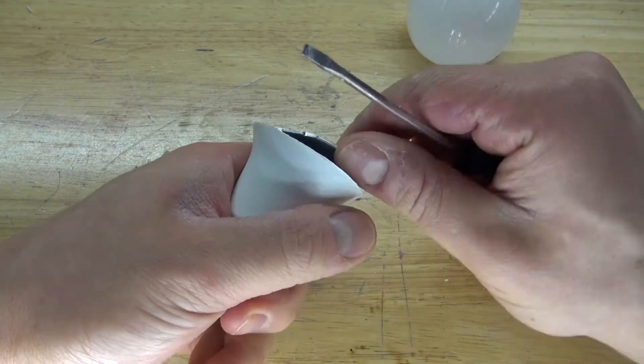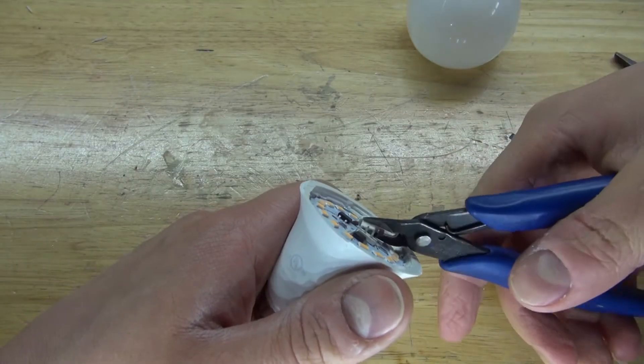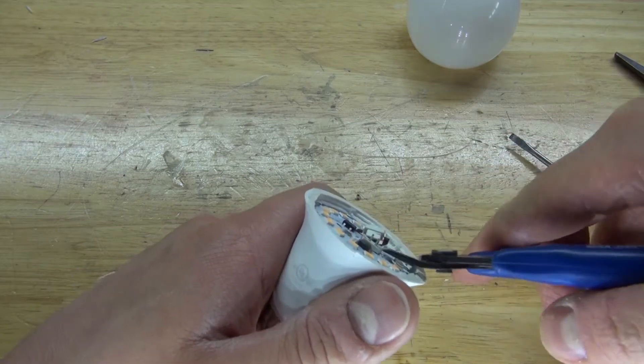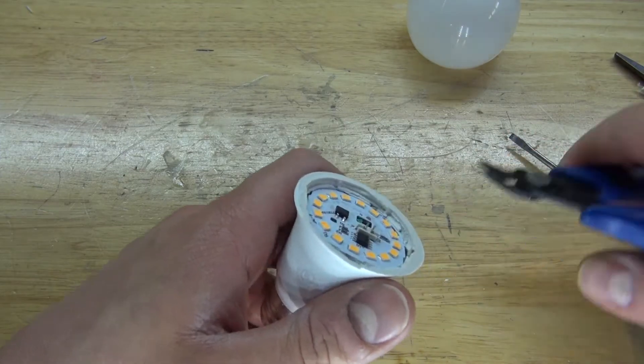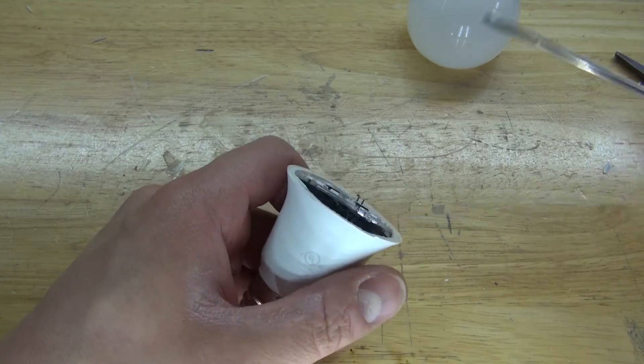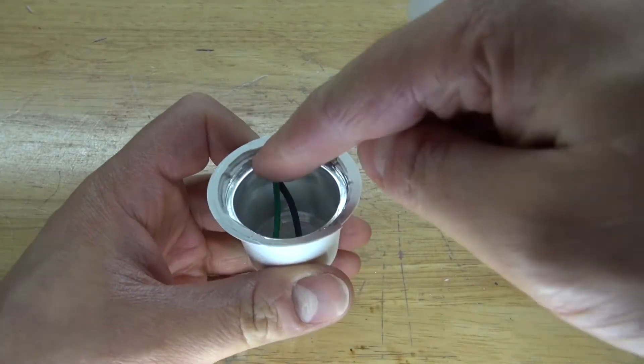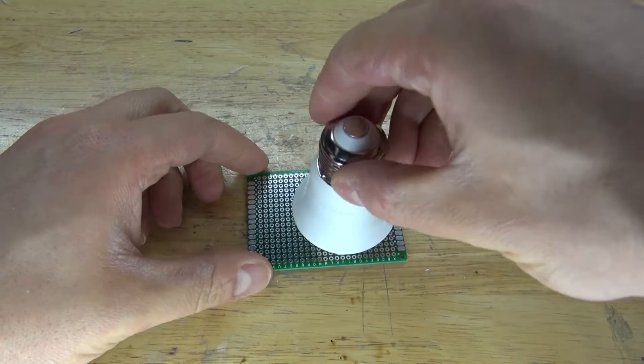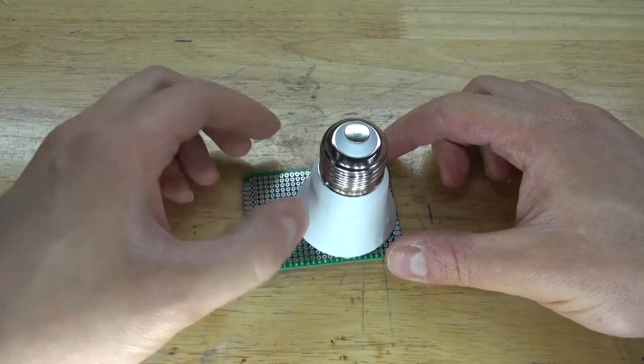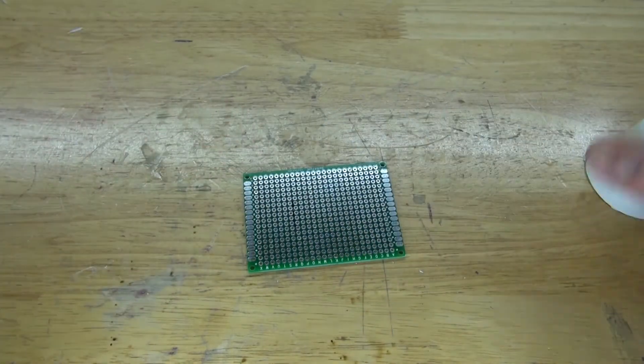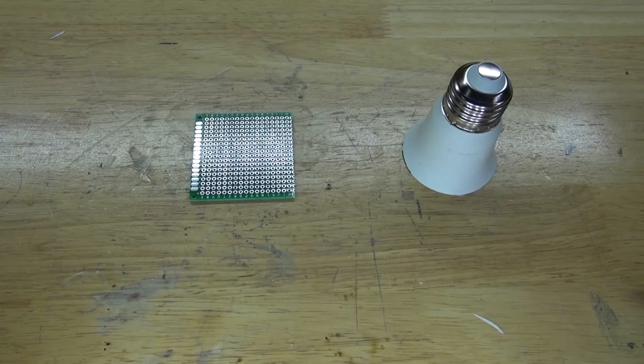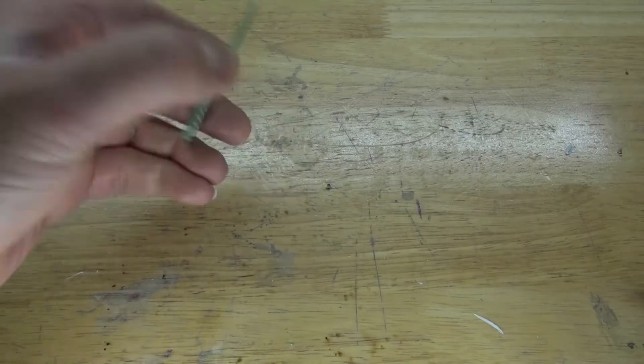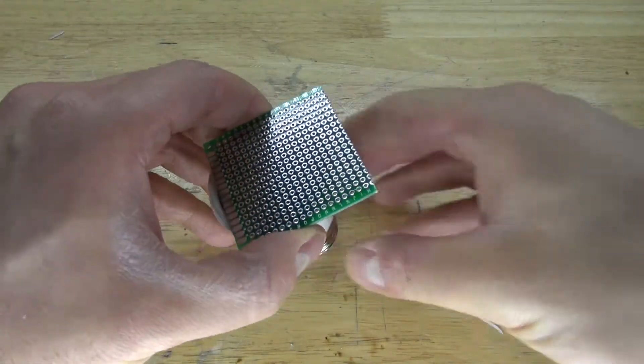Next I'm going to take the perfboard and the housing of the LED lightbulb, place it on, make a little mark, and cut off the excess perfboard. And as you can see, it's a perfect fit.